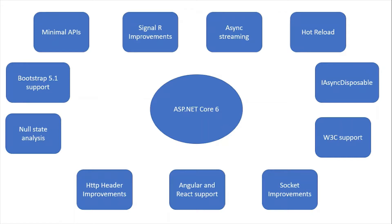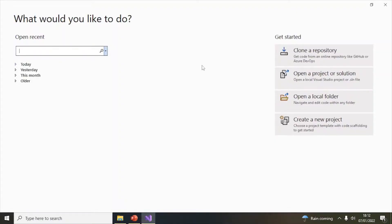Developers can use these features to develop more rapidly and build better applications. One demerit worth highlighting is that ASP.NET Core 6 is only supported via Visual Studio 2022. If you are using an earlier Visual Studio version, you will not be able to use ASP.NET Core 6. You can download Visual Studio 2022 or the Community Edition, which is available for free — links are in the description below.